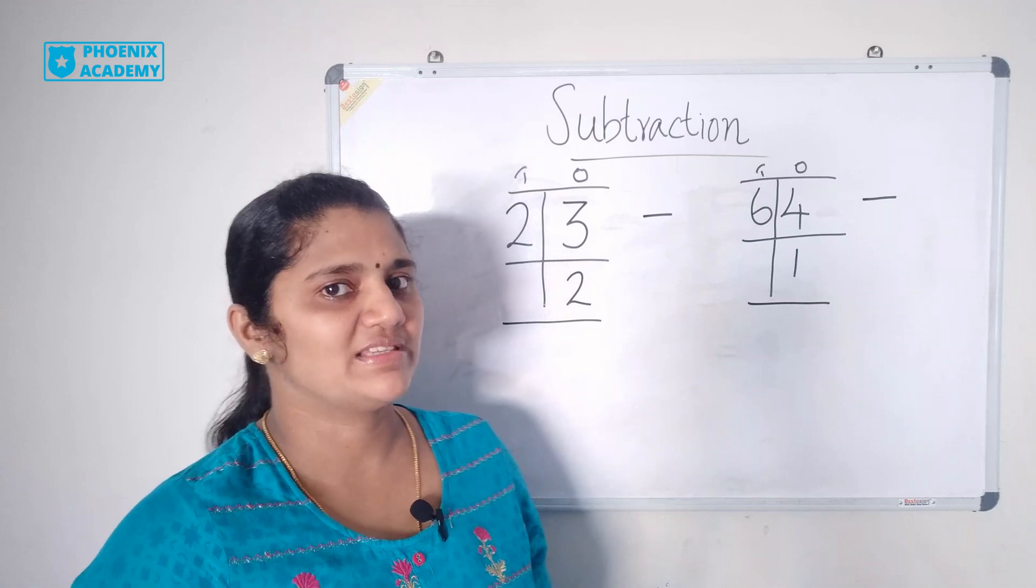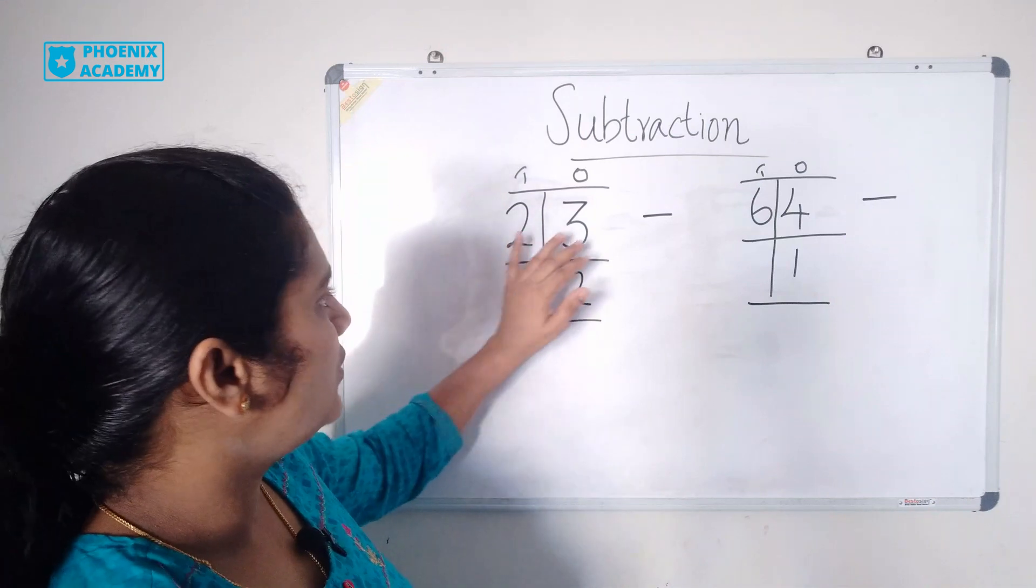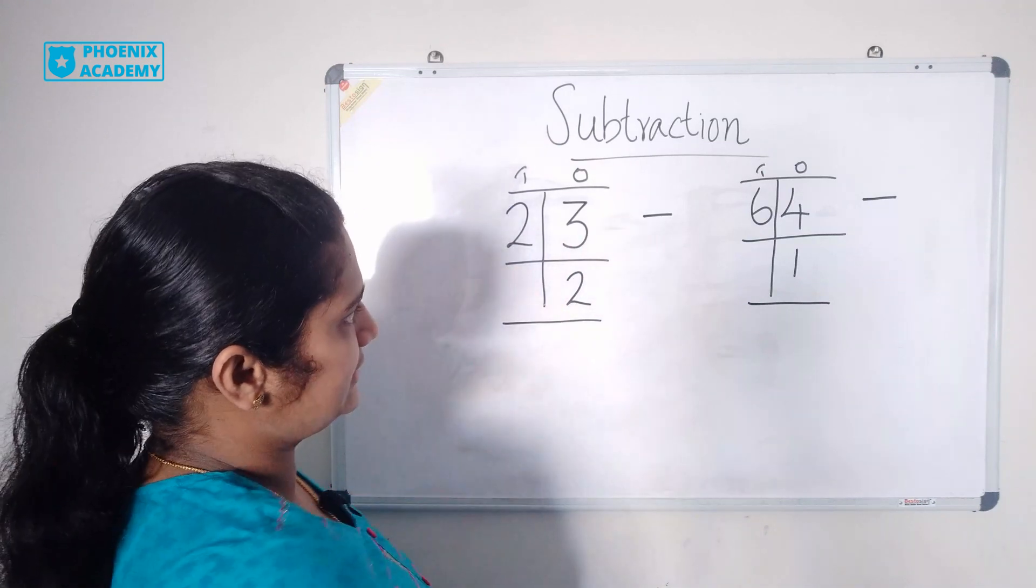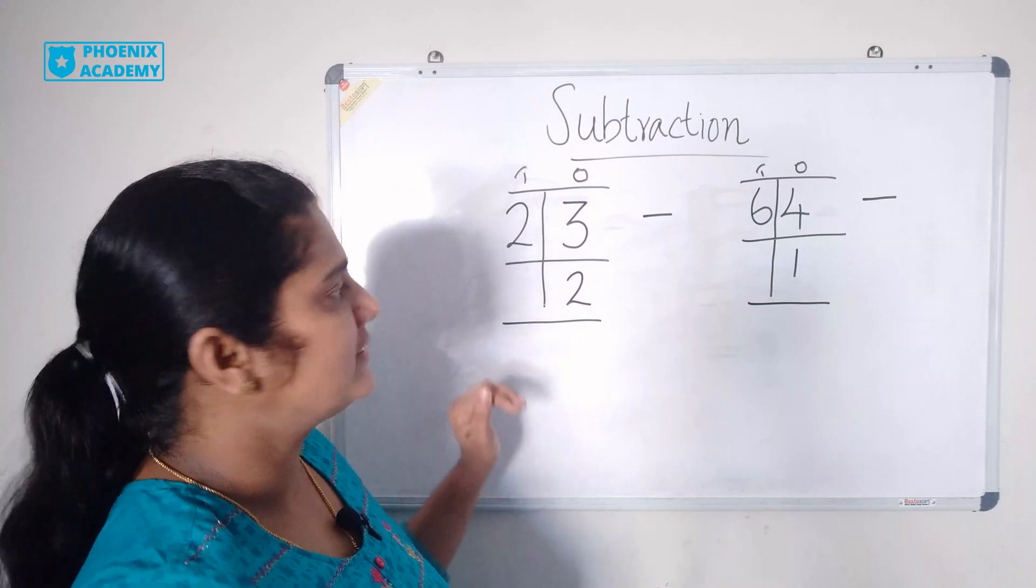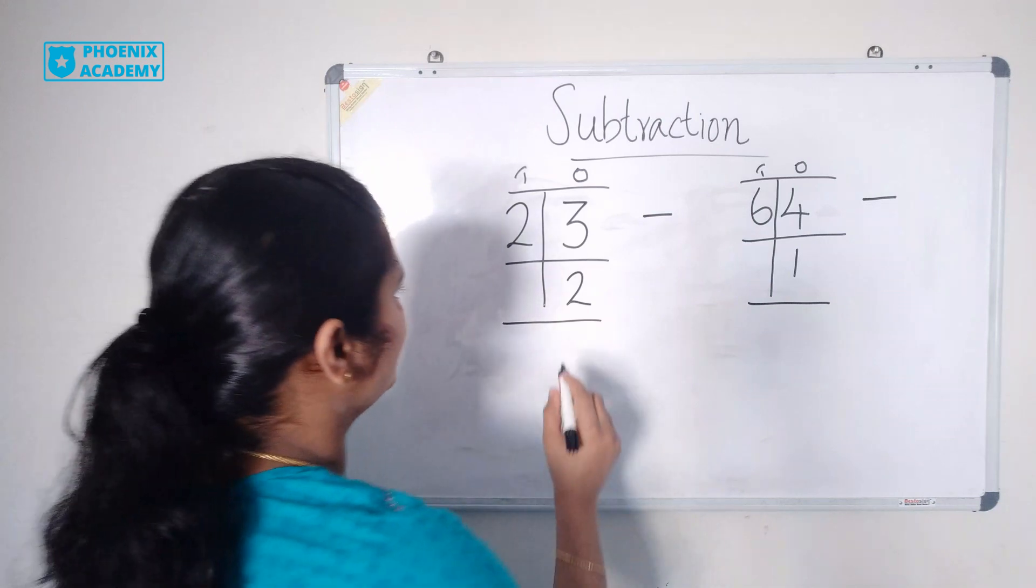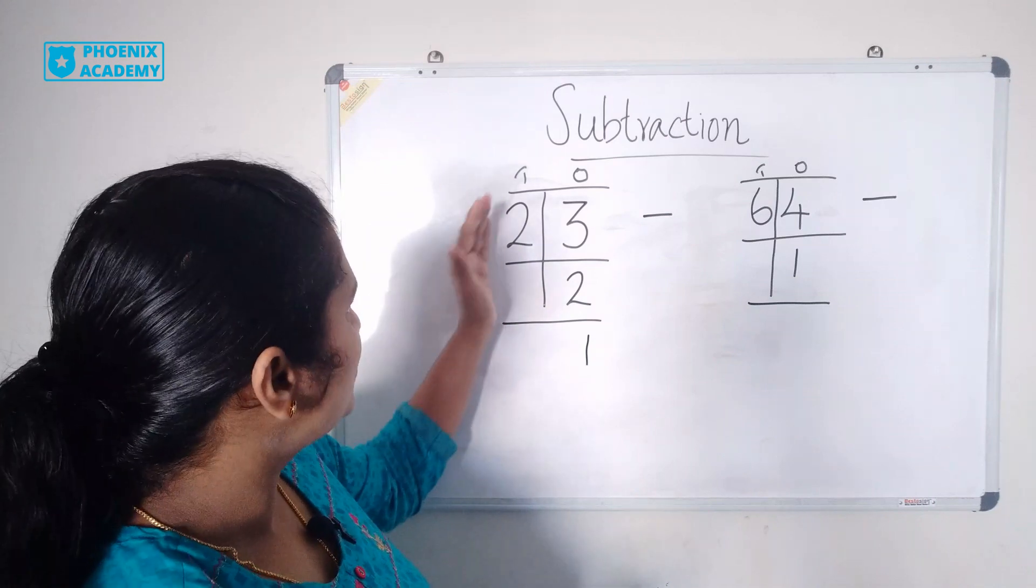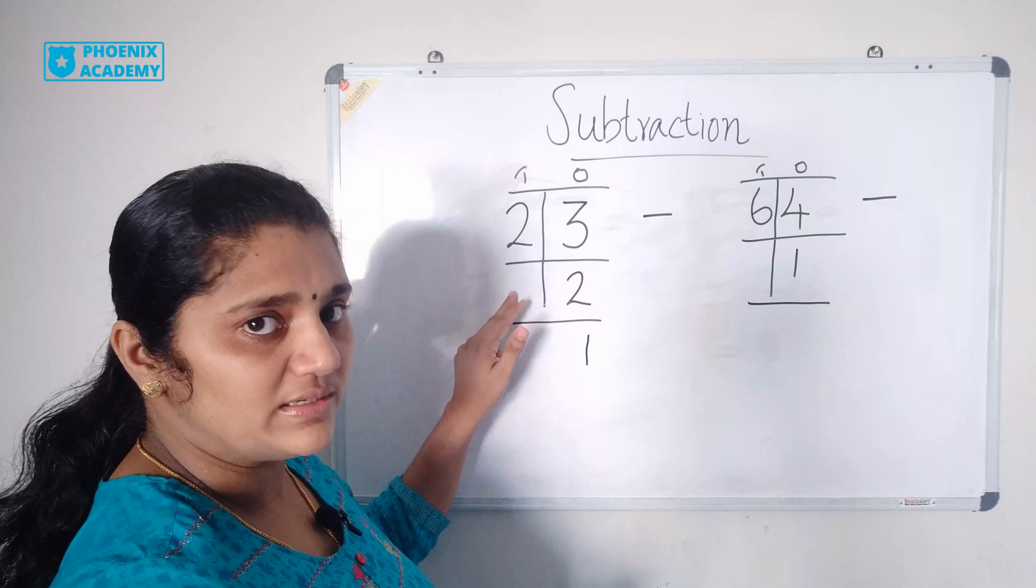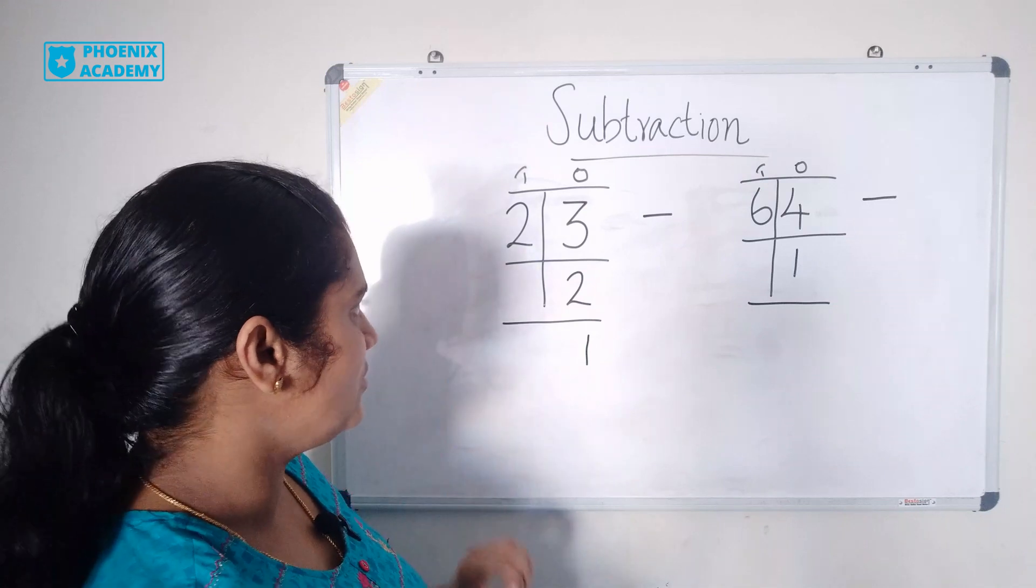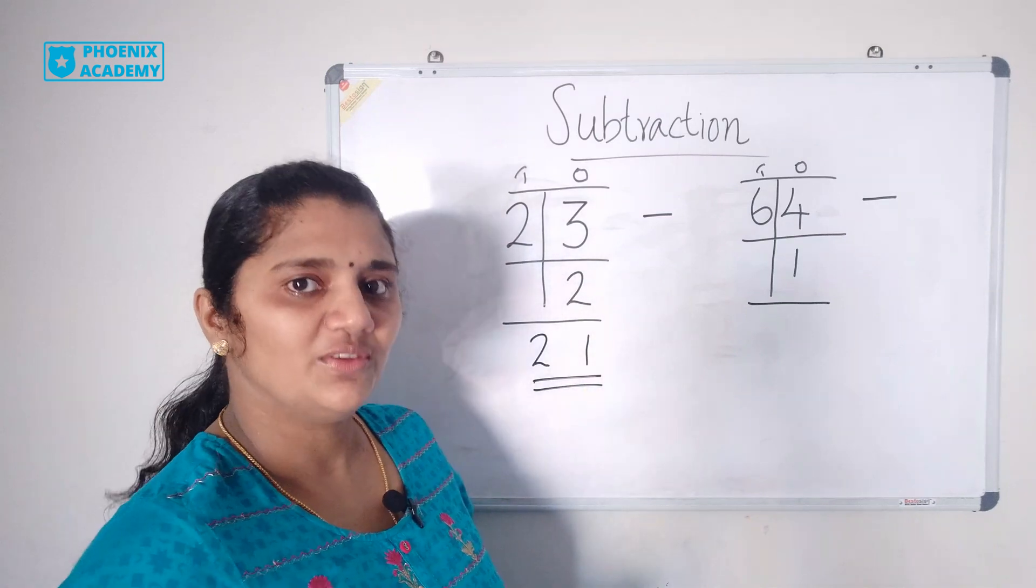Let's do more examples. We are going to subtract a 1 digit number from a 2 digit number. Here 23 minus 2. 23 is 3 ones and 2 tens. Let's subtract from ones. 3 minus 2 is 1. Let's subtract tens now. We don't have any values in tens place. So we consider tens value as 0. So 2 minus 0 is 2. So the answer is 21.